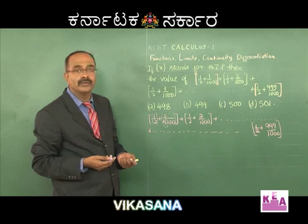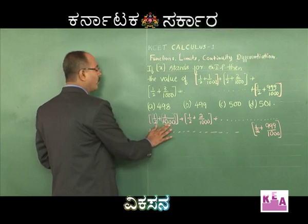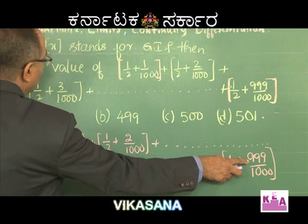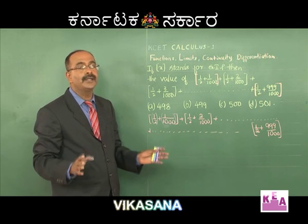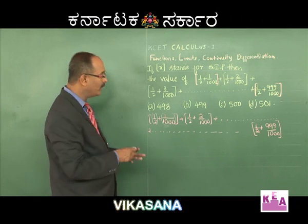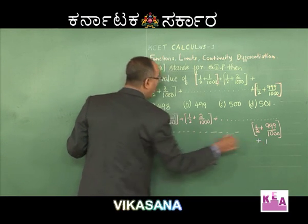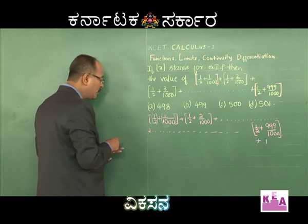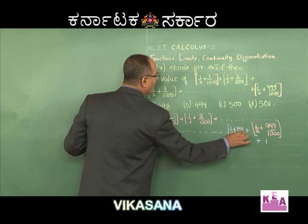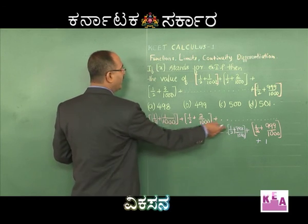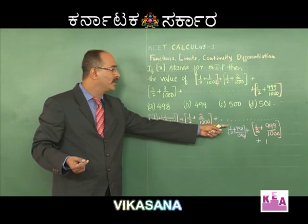The answer is not simply 0. Look at the last term: 1/2 + 999/1000 = 0.5 + 0.999 = 1.499, and GIF(1.499) = 1. Also the term before it: 1/2 + 998/1000 = 1.498, which is between 1 and 2, so GIF is also 1. So it started with 0 and ends with 1 — in between there must be a transition.